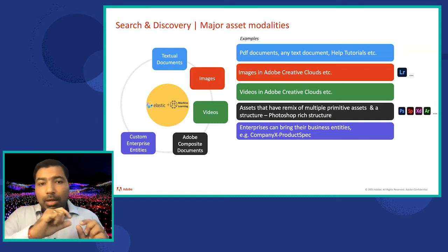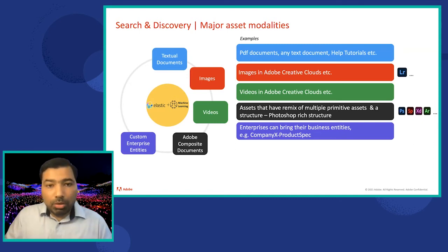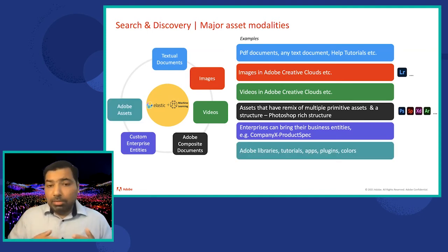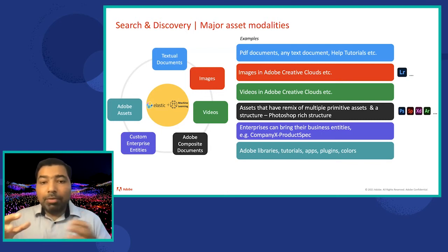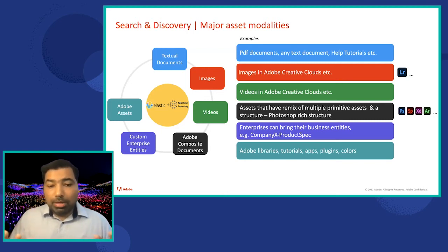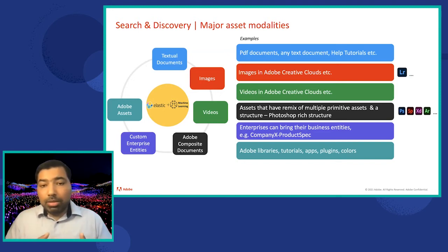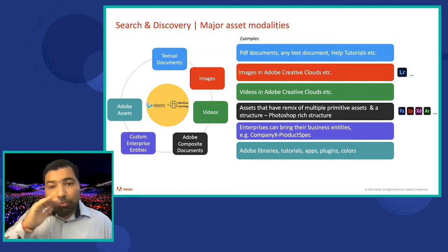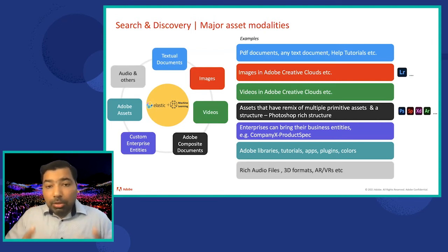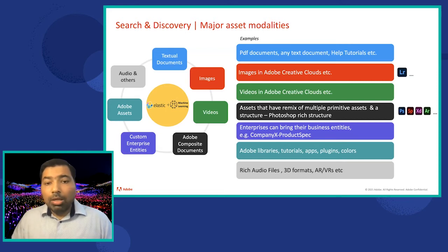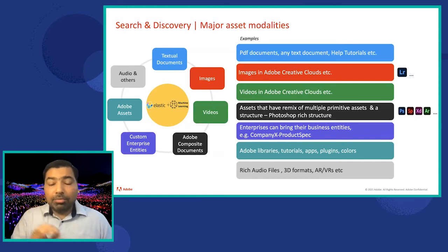Custom entities: enterprises can bring their own entities to search on. Adobe assets — tutorials, plugins, colors, fonts, libraries — can be reused across applications and the ecosystem. And there are new modalities coming: audio is not entirely new, but AR, VR, and 3D formats are all new. Searching and discovering that kind of content needs different technology, so we're using machine learning and Elasticsearch to power those experiences.